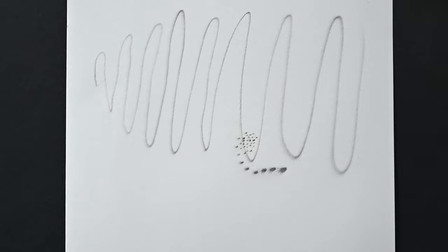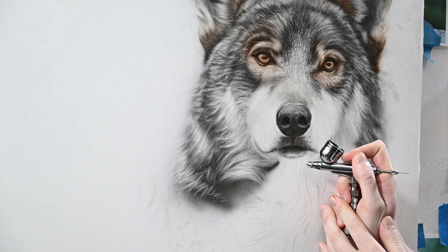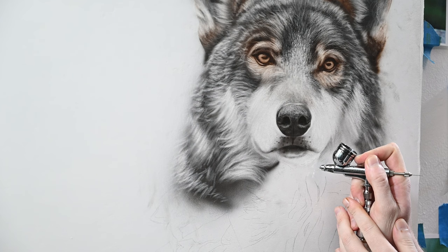So this is very similar to the Iwata Eclipse. And if you get in really close, hold it right off the surface, you can get a line width that's identical to the Sotar 2020 and very similar to the Iwata Micron.